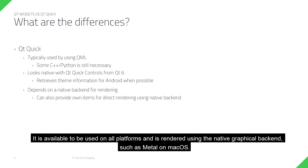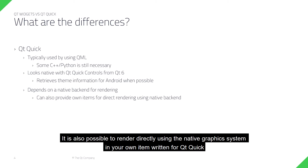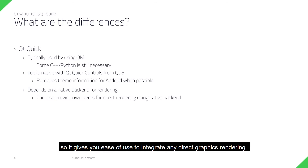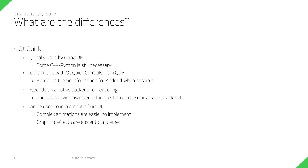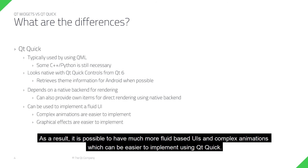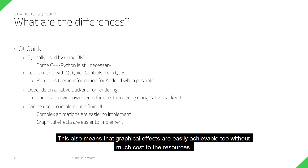Qt Quick is available to be used on all platforms and is rendered using the native graphical backend, such as Metal on macOS. It is also possible to render directly using the native graphics backend in your own item written for Qt Quick, so it gives you ease of use to integrate any direct graphics rendering. As a result, it is possible to have much more fluid-based UIs and complex animations, which can be easier to implement using Qt Quick. Graphical effects are also easily achievable without much cost to resources.